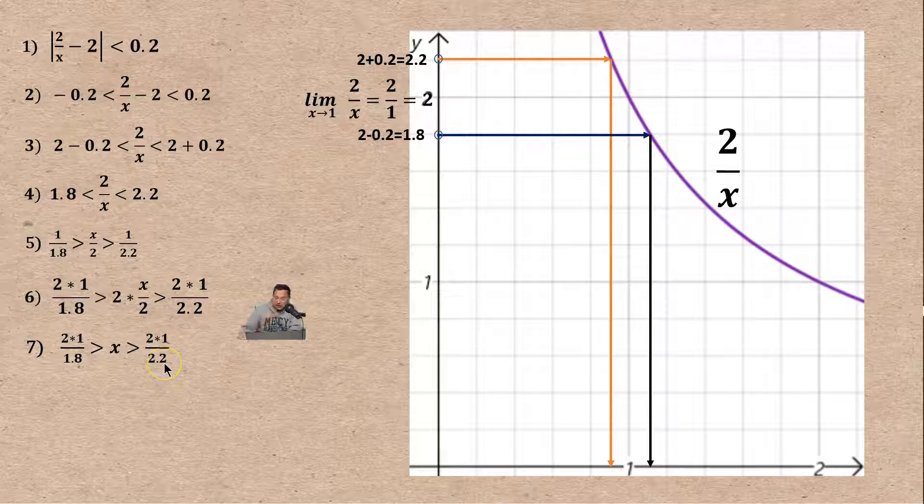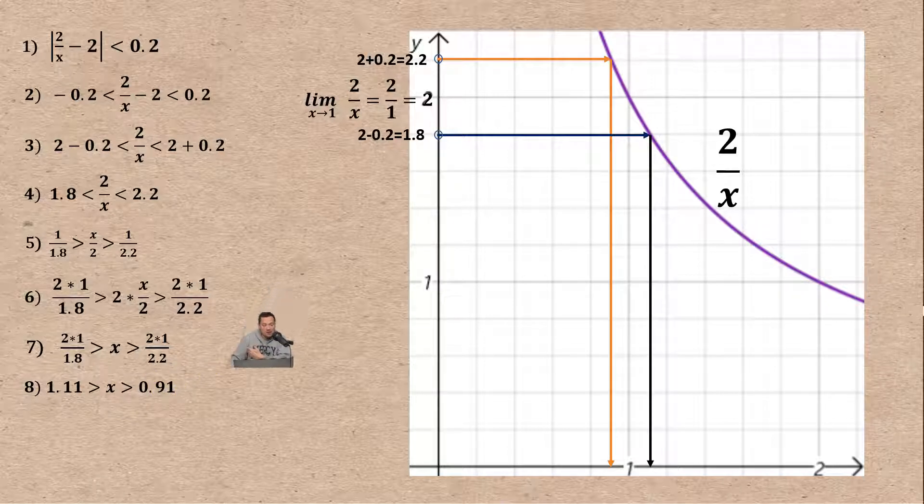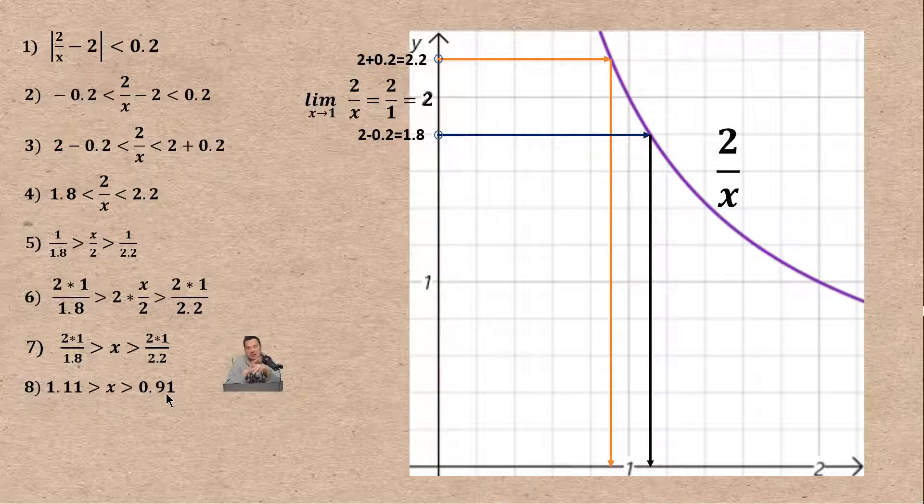I have 2.1 over 1.8 greater than x which is greater than 2.1 over 2.2. This inequality is cleaned up a little bit. That's going to give you that 1.11 is greater than x which is greater than 0.91. This is a fine way of writing this inequality but perhaps not the most natural way.